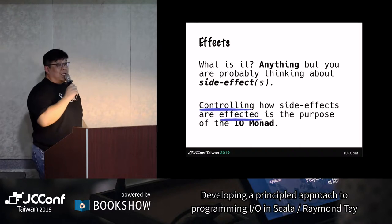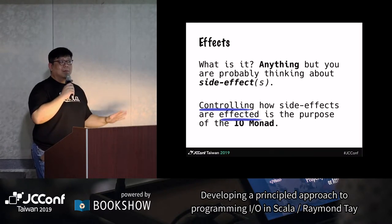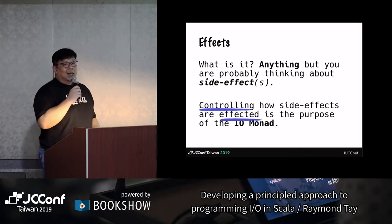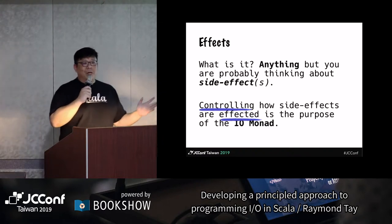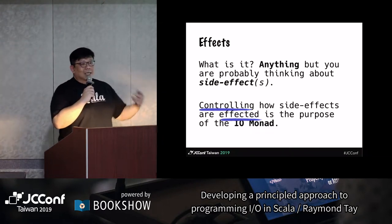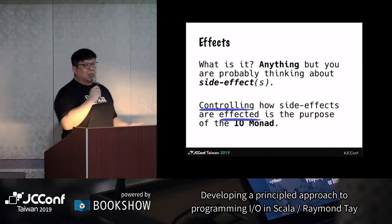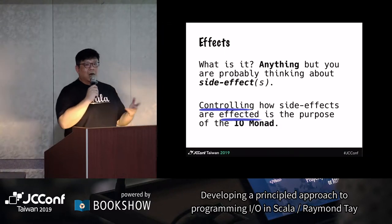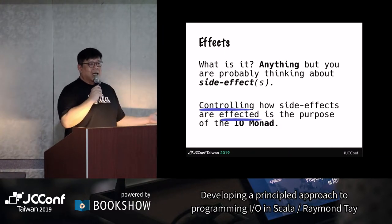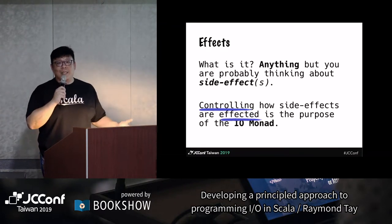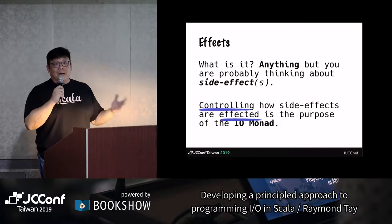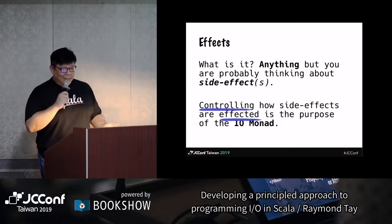Some people call it referential transparency. Referential transparency literally means: if I have a computation and I run it once, it gives me the result A. If I run it again, it will still give me the result A. That's what referential transparency means.